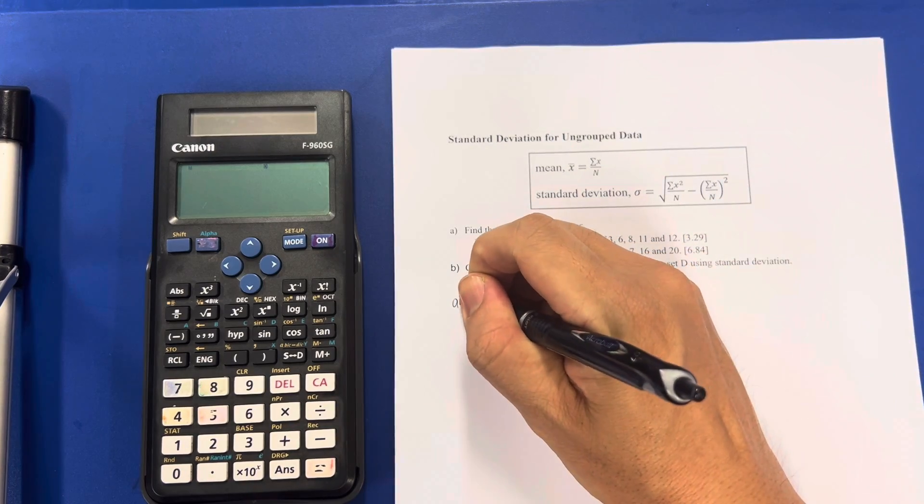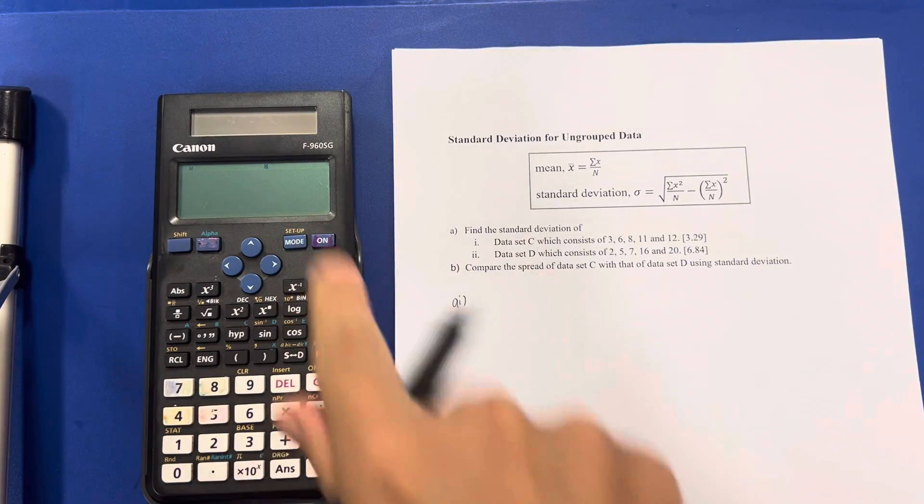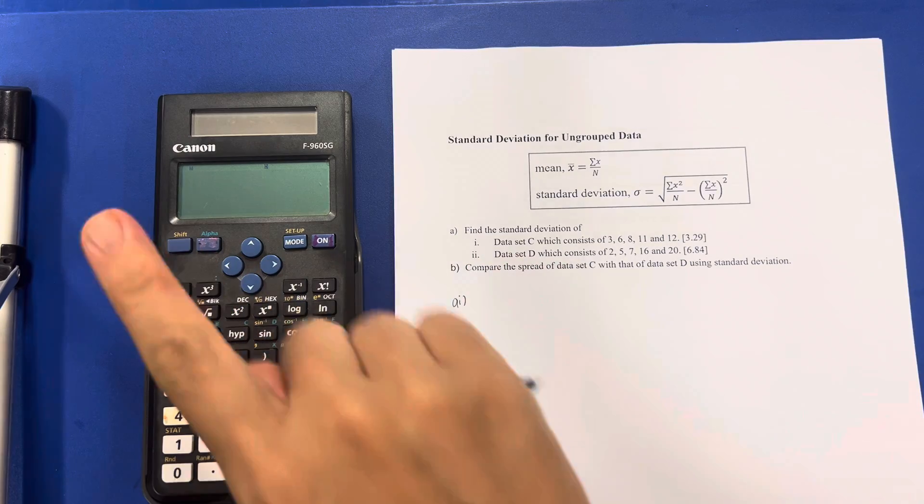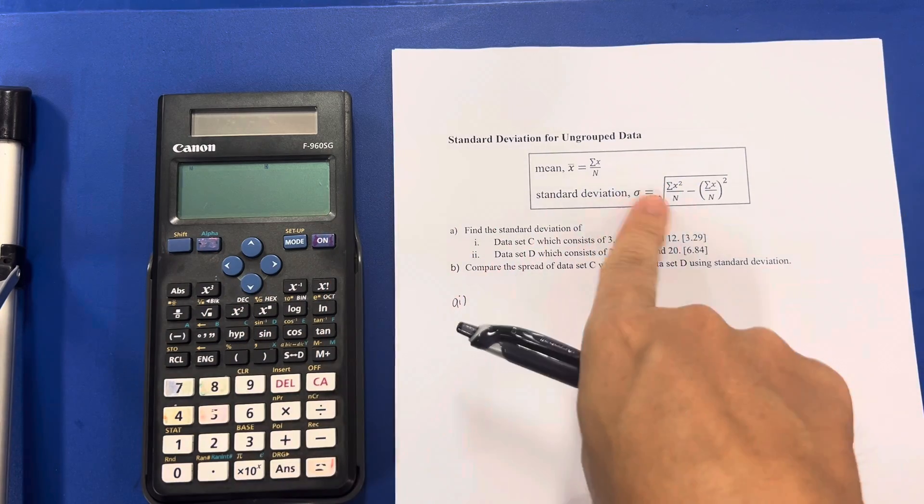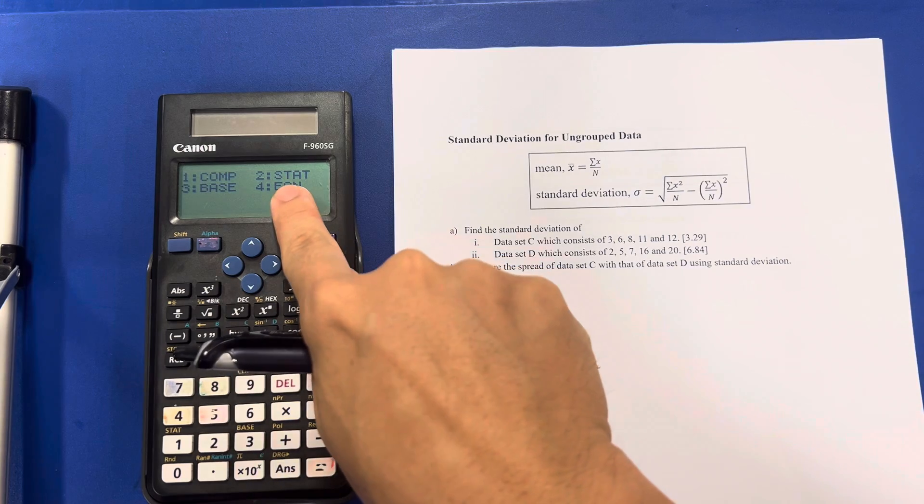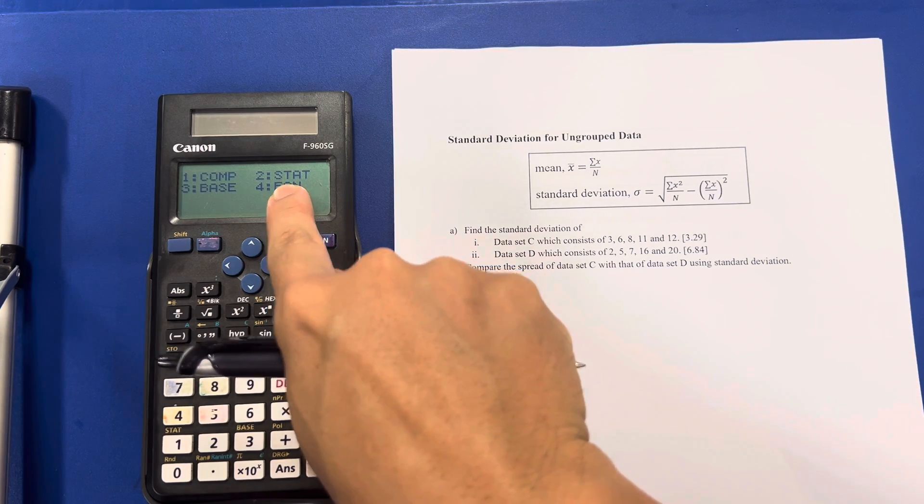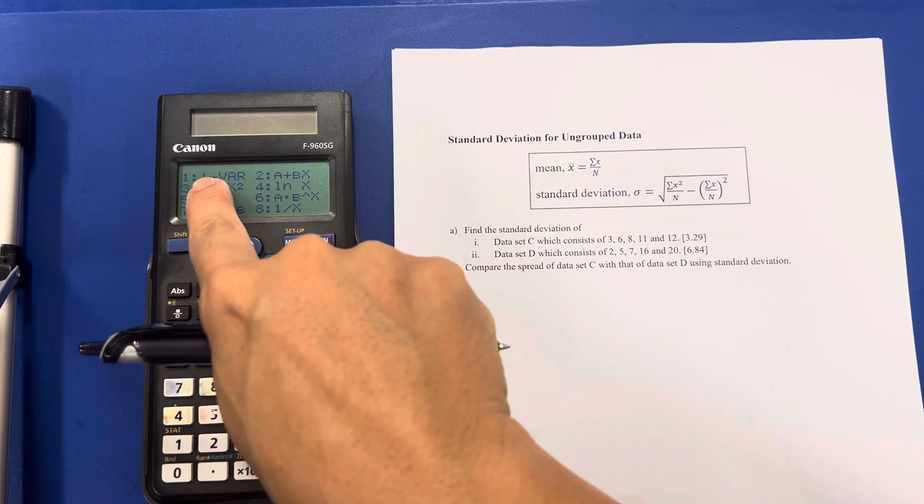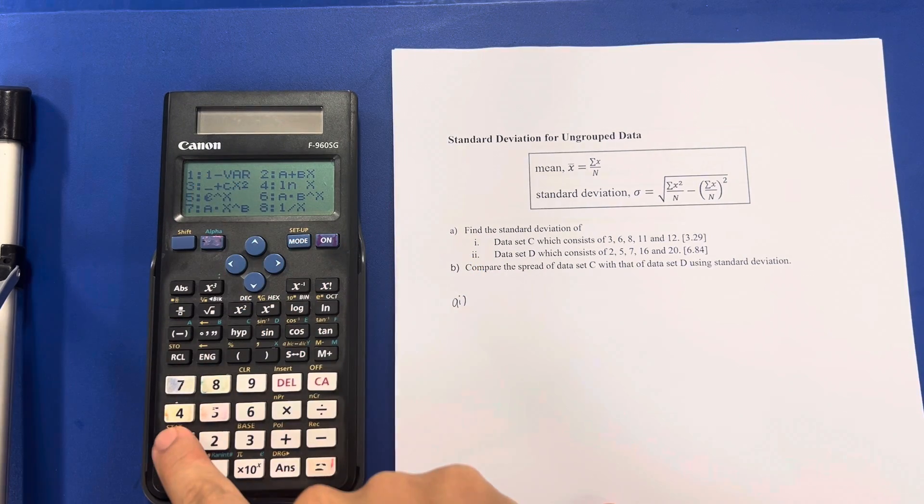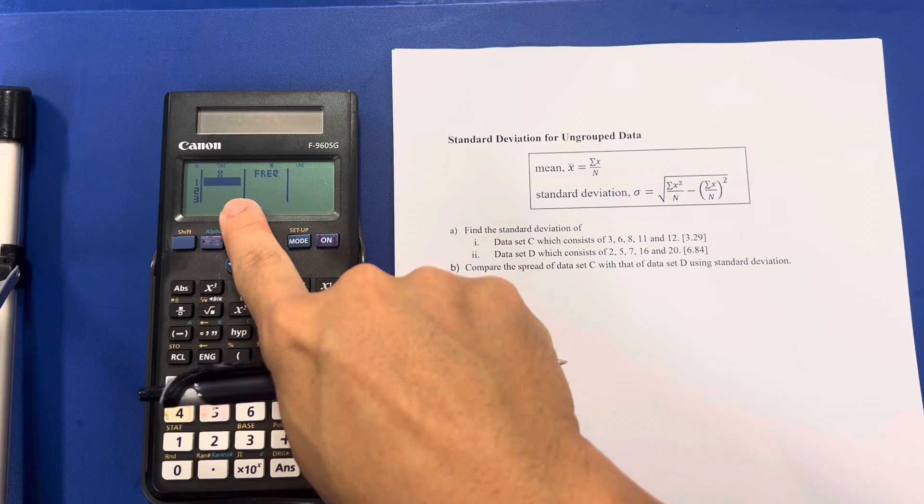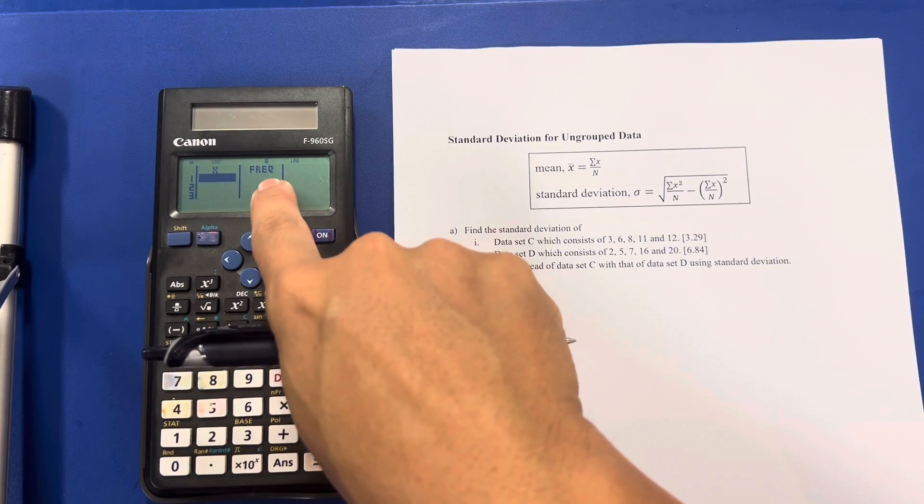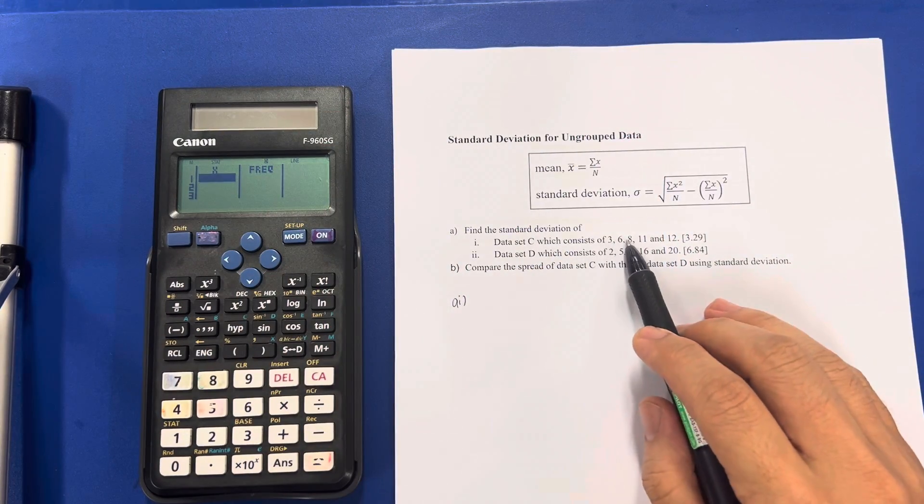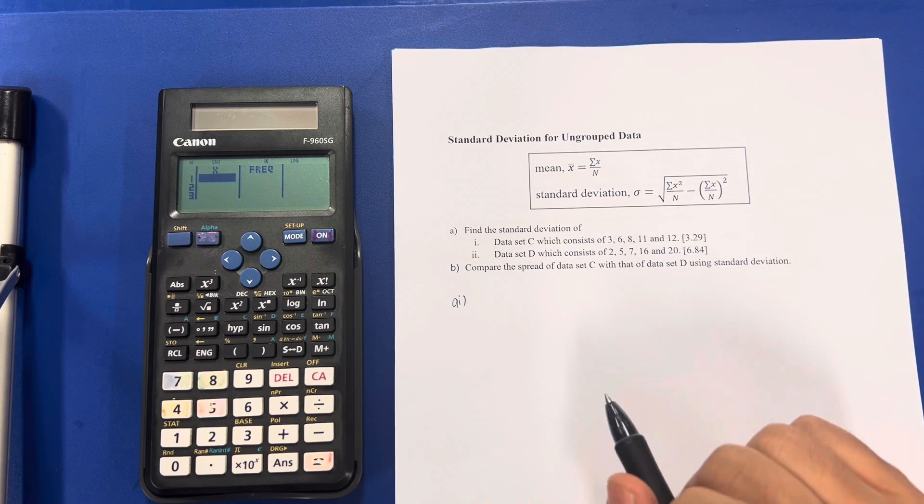So for part A, I'm going to make use of this. Step 1, I do want to check whether, yes, mode, statistic 2, press the 1 variable, number 1. And if your calculator has the frequency table, it's fine. All this data is just 1 each.